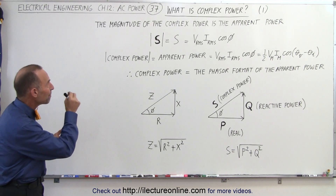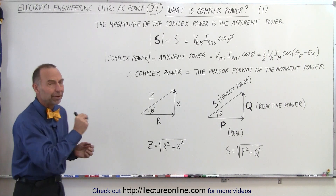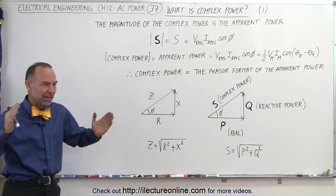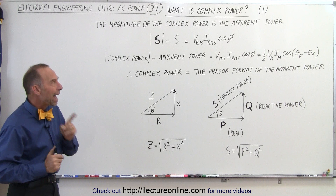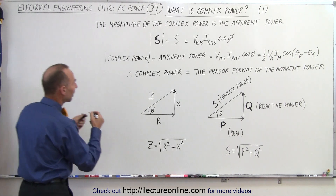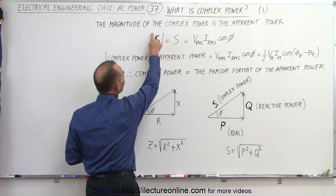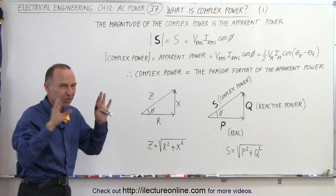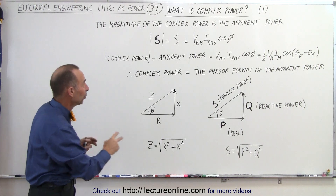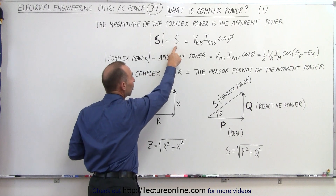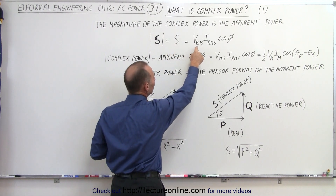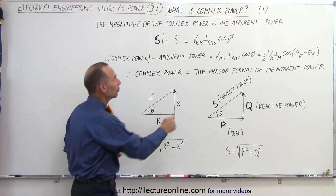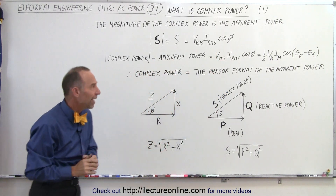We can say that the magnitude of the complex power is the apparent power. So we haven't really explained yet what complex power is, but whatever it is, if we take the magnitude of that, it is the same as the apparent power. The magnitude of complex power — notice we have a bold-face S that implies it's a vector-like quantity, in other words, a phasor — equals the apparent power, which is the product of the RMS voltage and the RMS current times the cosine of the phase angle between them, and the cosine of the phase angle between them is the power factor.